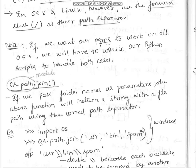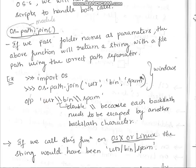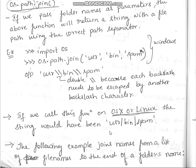For example, calling 'os.path.join("user", "bin", "spam")' joins these three folder names. On Windows, the output will be 'user\\bin\\spam' — each backslash is escaped by another backslash, which is why we see double backslashes. On Linux or OSX, the output will be 'user/bin/spam' using a single forward slash.